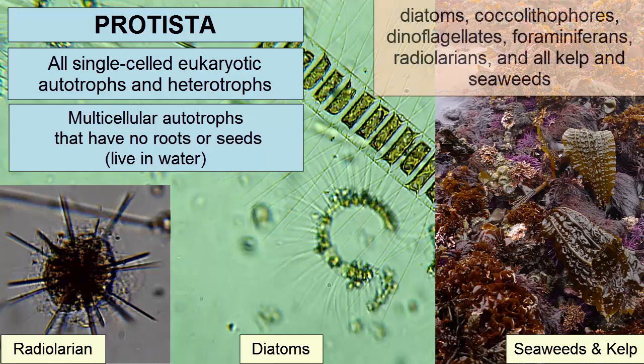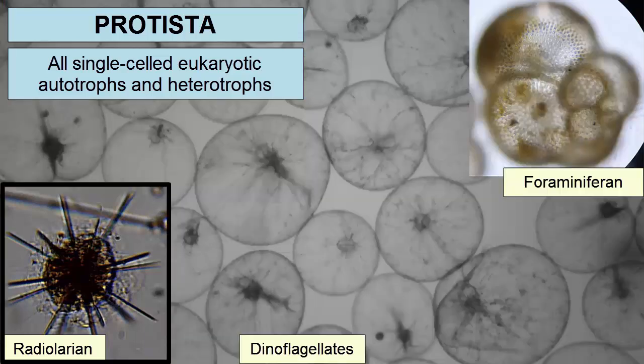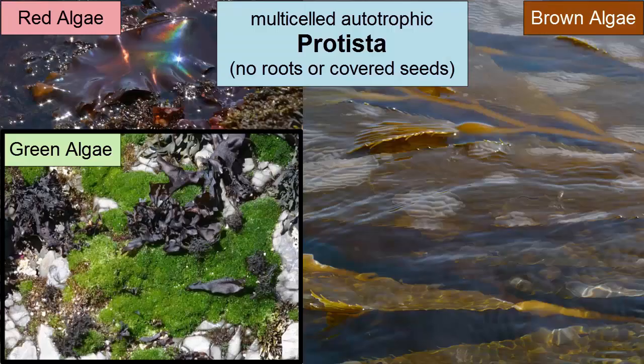Protista include diatoms, coccolithophores, dinoflagellates, foraminiferans, radiolarians, and all kelp and seaweeds. All single-celled eukaryotic heterotrophs and autotrophs are known as protista. Multi-celled protista include kelp and seaweeds, which are further classified according to the accessory pigments they contain, using three phyla.